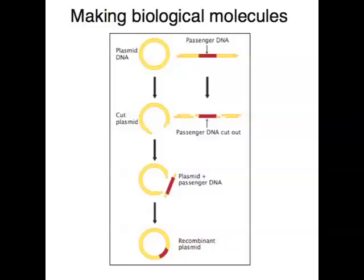Sometimes people get sick because they have a disease which affects the way their bodies produce a particular biological molecule — maybe their bodies are unable to produce it or don't produce it in significant quantities. If this happens, it's possible to manufacture or genetically engineer the biological molecule that those people are missing and then inject it into them. An example of this is diabetes — diabetics can't produce enough of the hormone insulin, which is responsible for the level of glucose in the blood, taking up glucose from the blood and storing it in the liver.